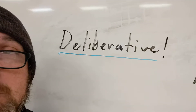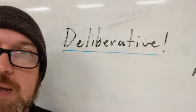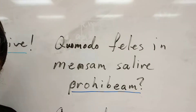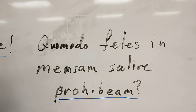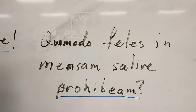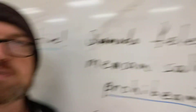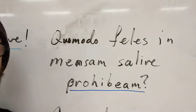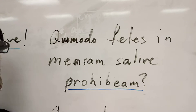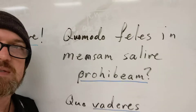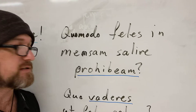So that's the jussive/hortatory. There is also something called the deliberative subjunctive. The deliberative subjunctive is distinctive because it typically shows up as a question, but it's not a question you're asking because you need an answer. It might be something like 'Quo modo feles in mensam salire prohibeam' — how can I stop the cats from jumping onto the table? Now, this is not an honest question because obviously you can't stop the cats from jumping onto the table. You can fuss at them when they do, but you can't actually stop them.